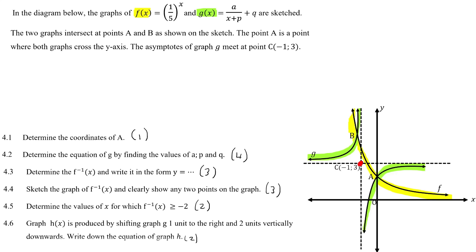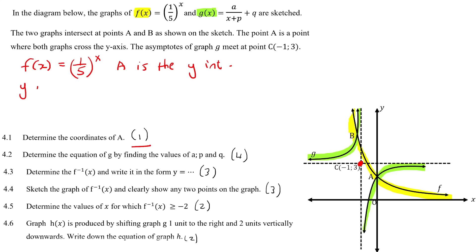The first question is to determine the coordinates of a. Well, a is a y-intercept of both graphs. With this graph we don't really have a lot of information, so let's not use that. But with this one, we have everything. So we could take f of x and find its y-intercept. A y-intercept is where x is zero, so we could say what is f of zero? That's going to give you one — anything to the power of zero is one. So the coordinates of a would be x equals zero and y equals one.